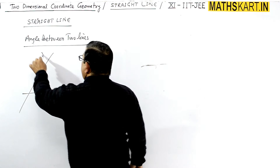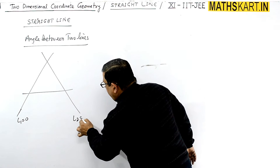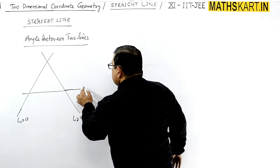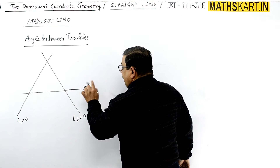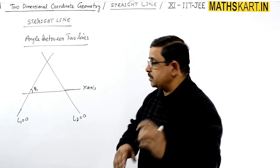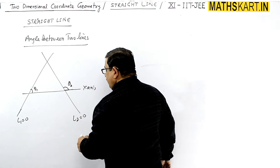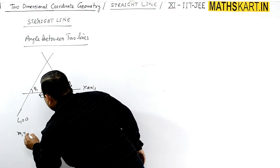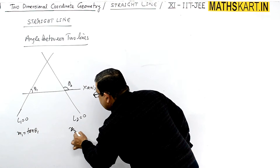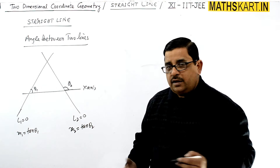The x-axis is given. The first line makes angle θ1 with the x-axis, so its slope m1 = tan(θ1). The second line makes angle θ2, so its slope m2 = tan(θ2). Let the angle between the two lines be θ.